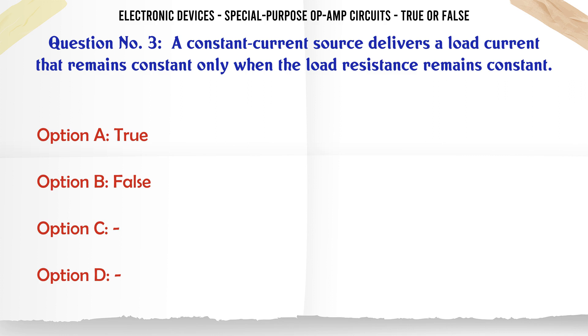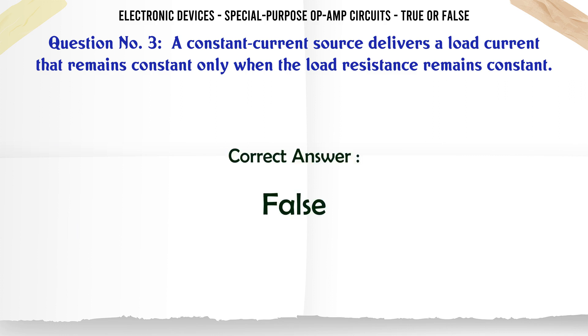A constant current source delivers a load current that remains constant only when the load resistance remains constant. A. True. B. False. C. D. The correct answer is False.